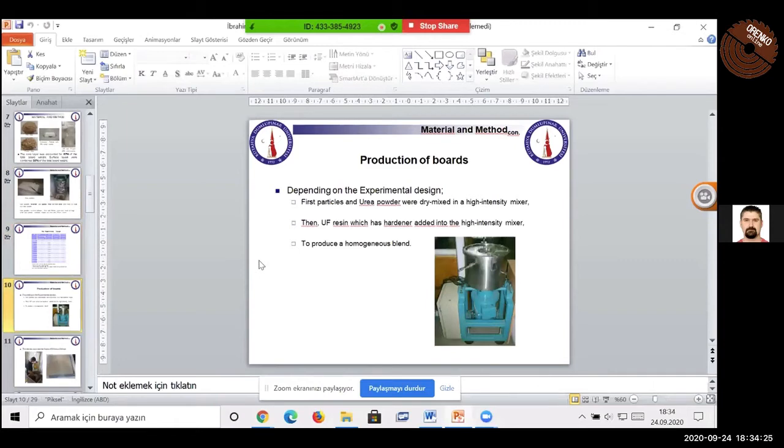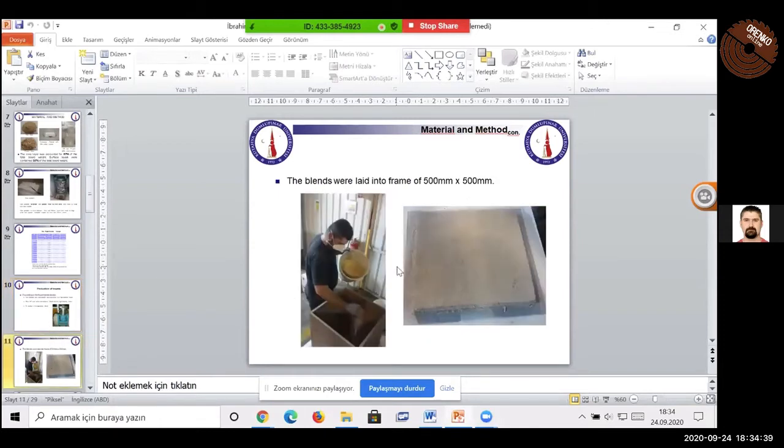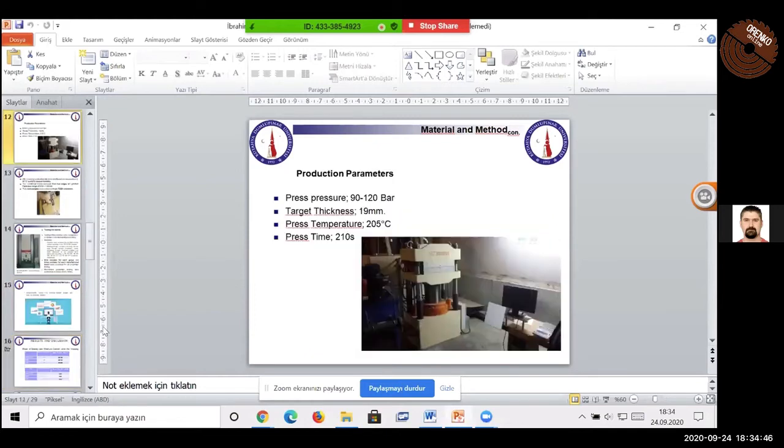Depending on the experimental design, first particles and UREP powders were dry mixed in a high intensity mixer. Then, urea-formaldehyde resin which has hardener added into the high intensity mixer to produce homogenous mats. The mats were laid into the same frame in the first study. This is our press production parameters. Press pressure between 19 and 120 bar, target thickness is 19 mm, press temperature is 205 Celsius degrees, press time is 210 seconds.